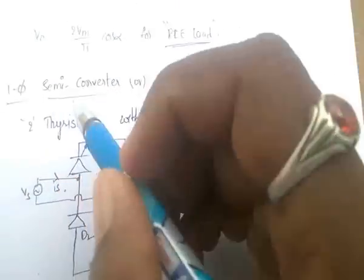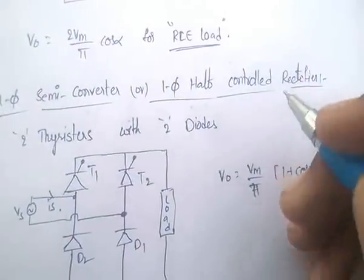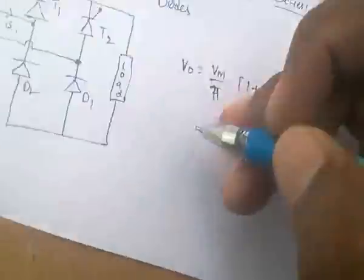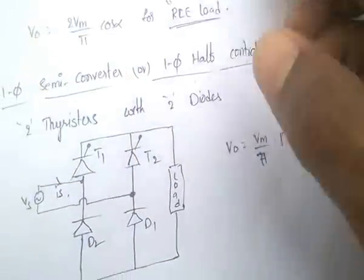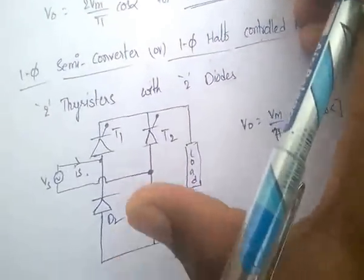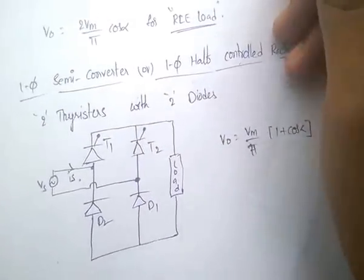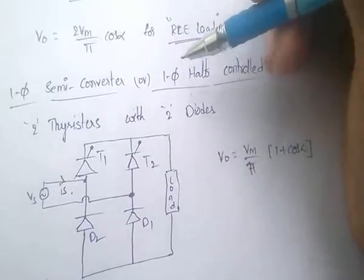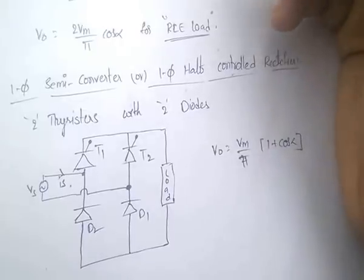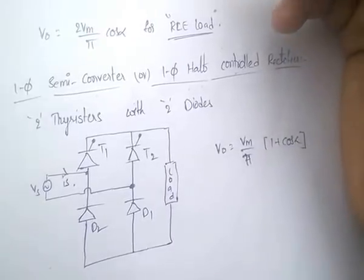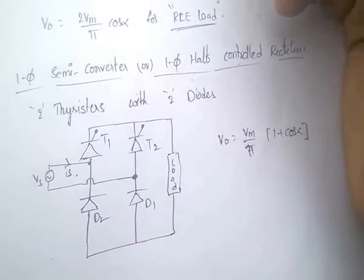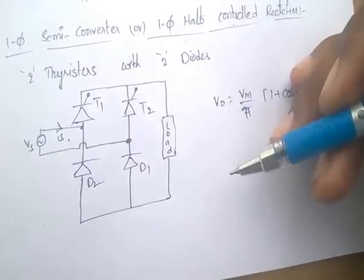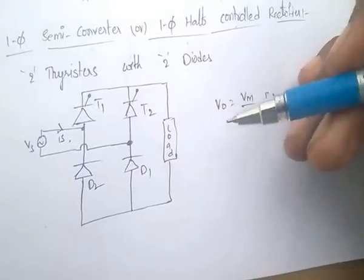Single phase semi-converter (also called single phase half-controlled rectifier) uses two thyristors T1, T2 and two diodes D1, D2. Output voltage V₀ = Vm/π × (1 + cos α). Summary of thyristor counts: half-wave → 1 thyristor; full-wave midpoint → 2; full-wave bridge → 4; semi-converter → 2 thyristors + 2 diodes.